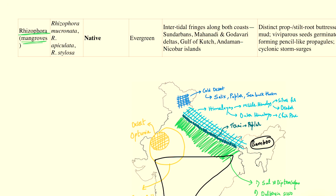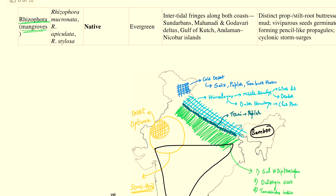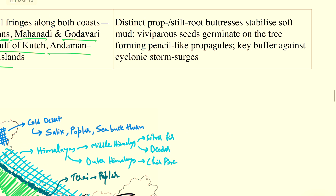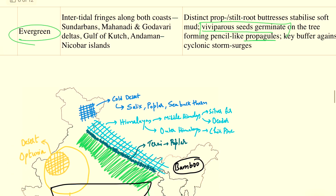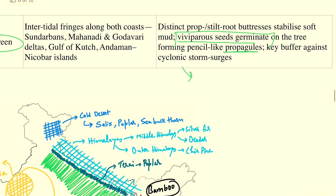Coming to the last species — Rhizophora — it is a mangrove species present in the Sundarbans, Mahanadi, Godavari deltas, Andaman and Nicobar Islands, and Gulf of Kutch. It is a native evergreen species. Its unique properties include distinct prop or stilt roots to stabilize its location in soft mud. The tree has viviparous seeds, which means it germinates on the plant itself and then falls down as propagules. The tree is also resistant to harsh saline conditions.